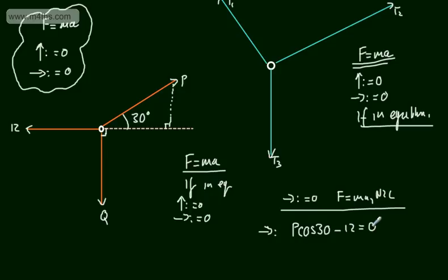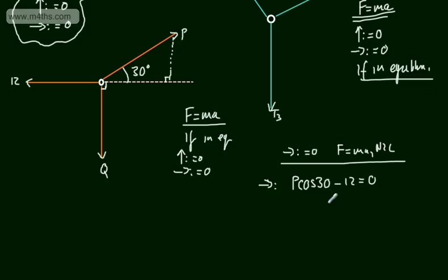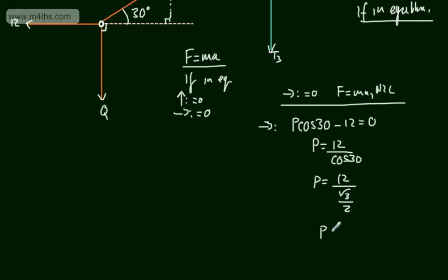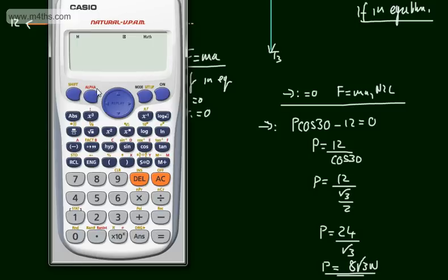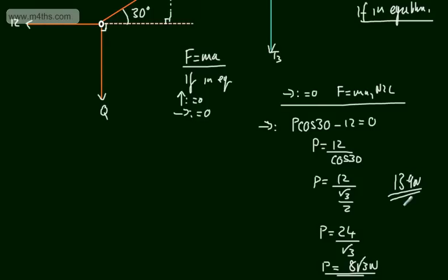So P cos 30 is equal to 12. Therefore P is 12 over cos 30. The cosine of 30 degrees is root 3 over 2, so P equals 24 over root 3, which rationalises to 8 root 3 Newtons. Alternatively, using a calculator in degrees mode: 12 divided by cos 30 gives 8 root 3, or approximately 13.9 Newtons to three significant figures.